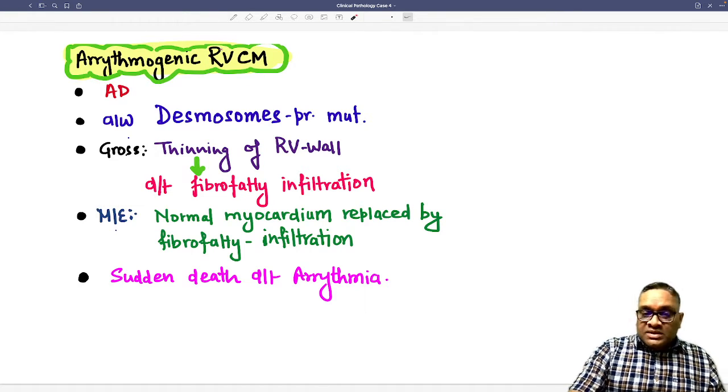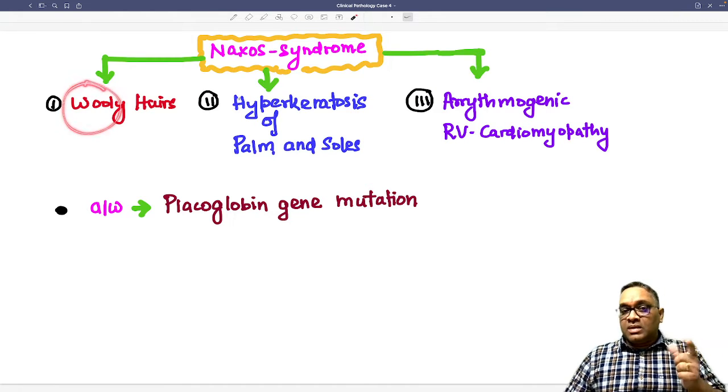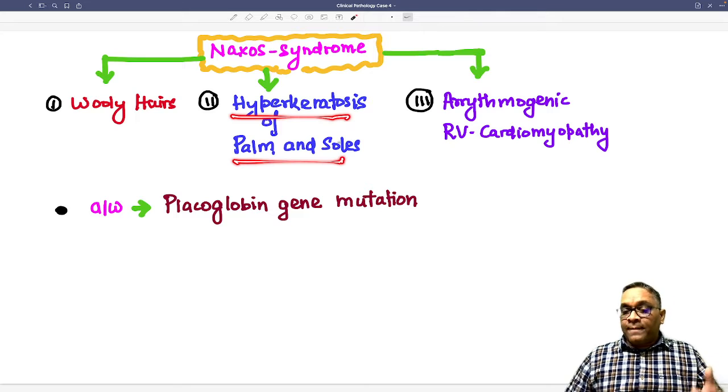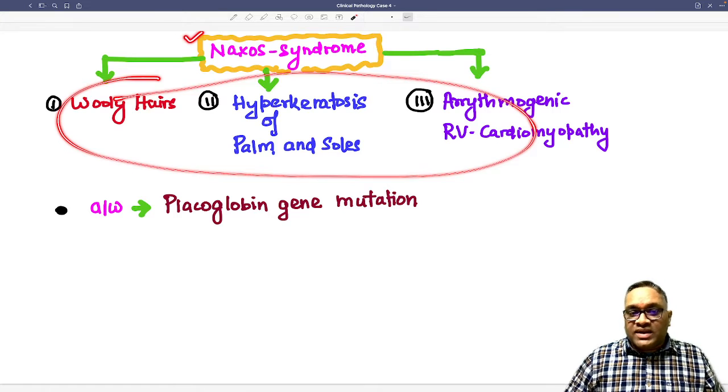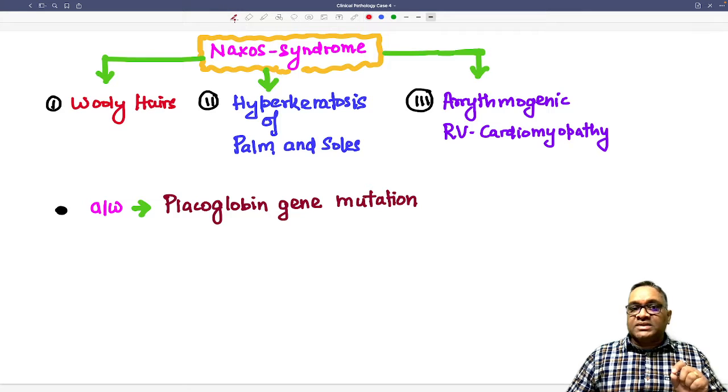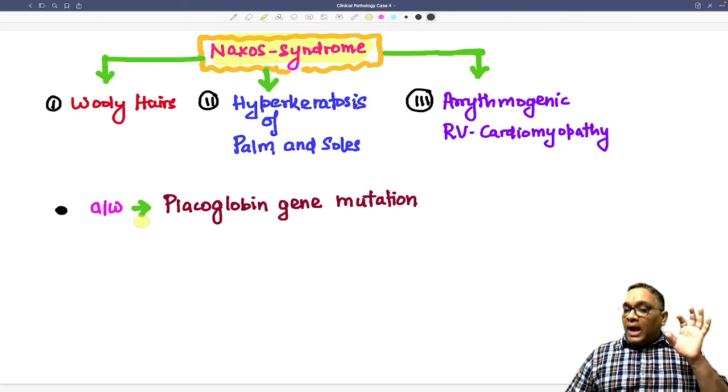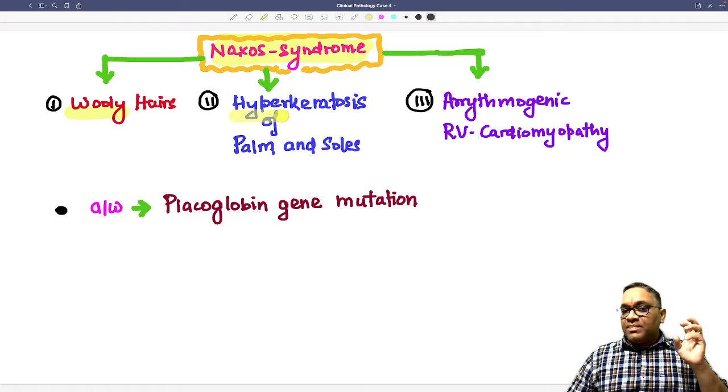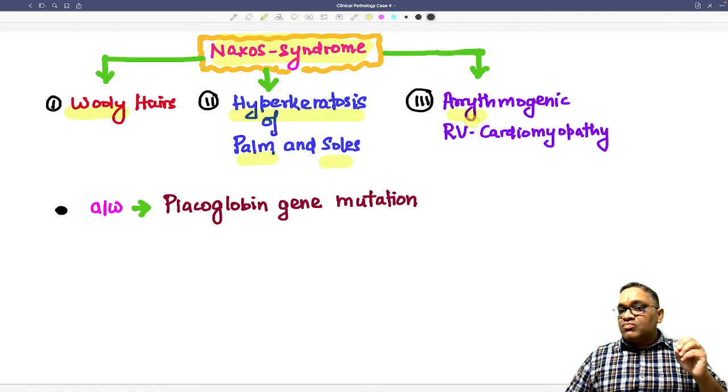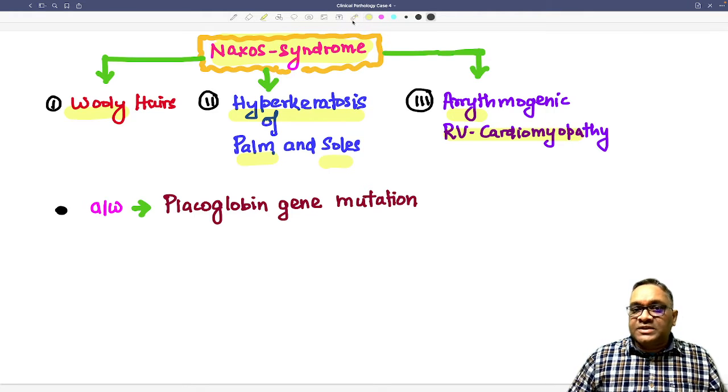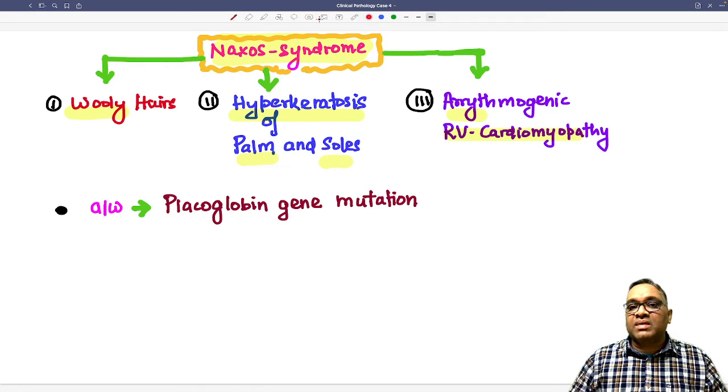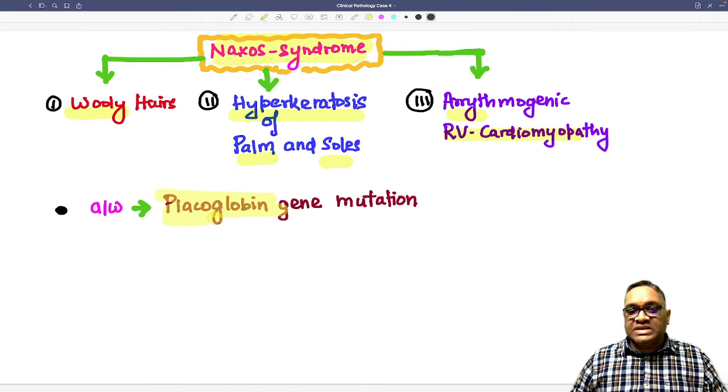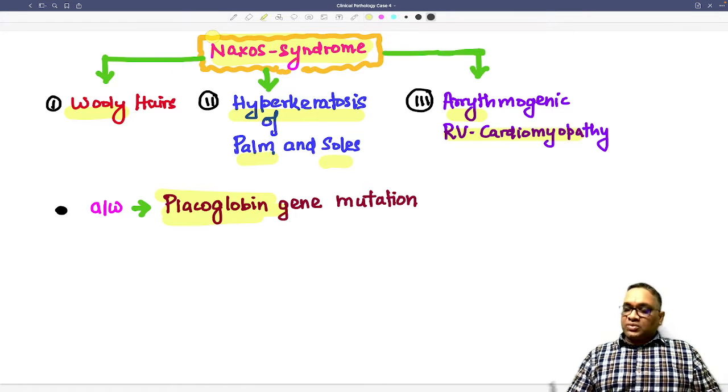Now come to this clinical case. This clinical case is having three important features: number one, woolly hairs; number two, hyperkeratosis of palm and soles; along with arrhythmogenic right ventricular cardiomyopathy. All these three things together are called Naxos syndrome. In this case, we have discussed the findings. Diagnosis will be Naxos syndrome. Naxos syndrome is woolly hair, hyperkeratosis of palm and soles, and arrhythmogenic right ventricular cardiomyopathy—these are the triad of features. In these patients, they are having mutation of the placoglobin gene. So we must remember that placoglobin gene mutation will be seen in Naxos syndrome.